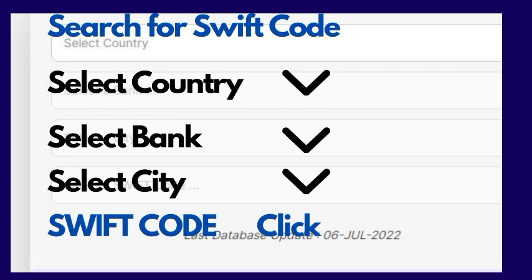An important tip: some people are in a very small town and don't belong to a particular city listed. In that case, select the nearest city. If you are from a village also, select the nearest city. Once all the drop-down menus are selected, click the SWIFT code button.